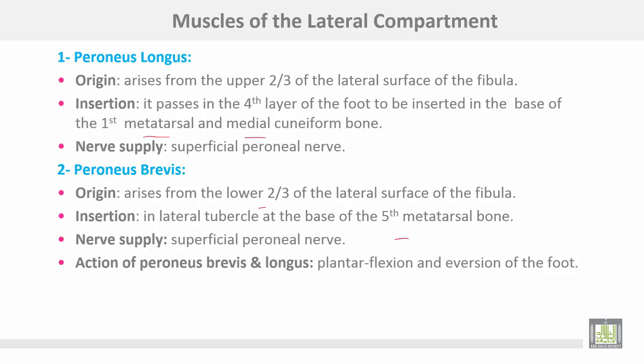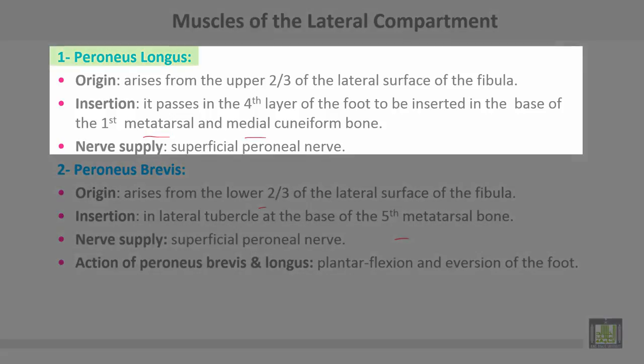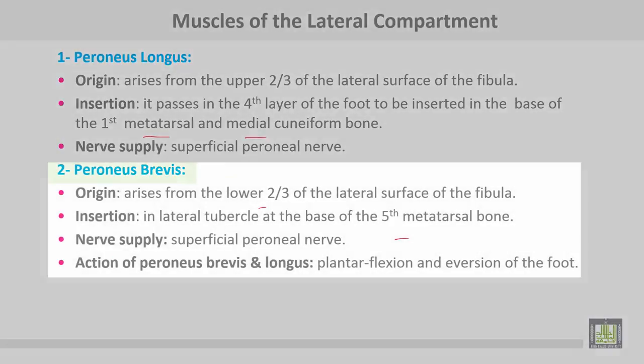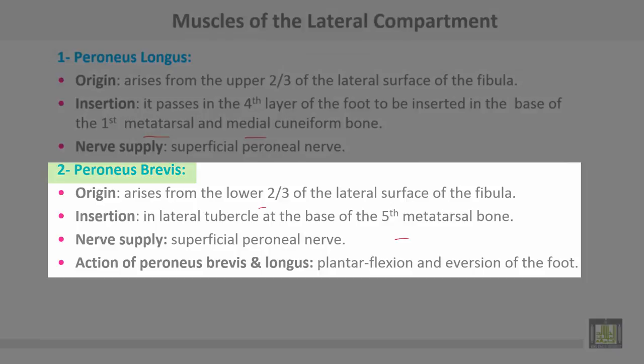Muscles of the lateral compartment: peroneus longus arises from the upper two-thirds of the lateral surface of the fibula, and is inserted — passing through the fourth layer of the foot — into the base of the first metatarsal and medial cuneiform. Nerve supply: superficial peroneal nerve. Peroneus brevis takes origin from the lower two-thirds of the lateral surface of the fibula and is inserted into the lateral tubercle at the base of the fifth metatarsal. Nerve supply: superficial peroneal nerve. Action of both: plantar flexion and eversion of the foot.